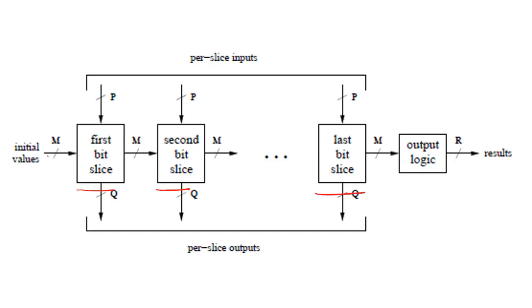We pass information from one bit slice to the next in order to remember what happened in one bit slice, and then we'll perform some output logic, usually to be able to summarize what the circuit computed.